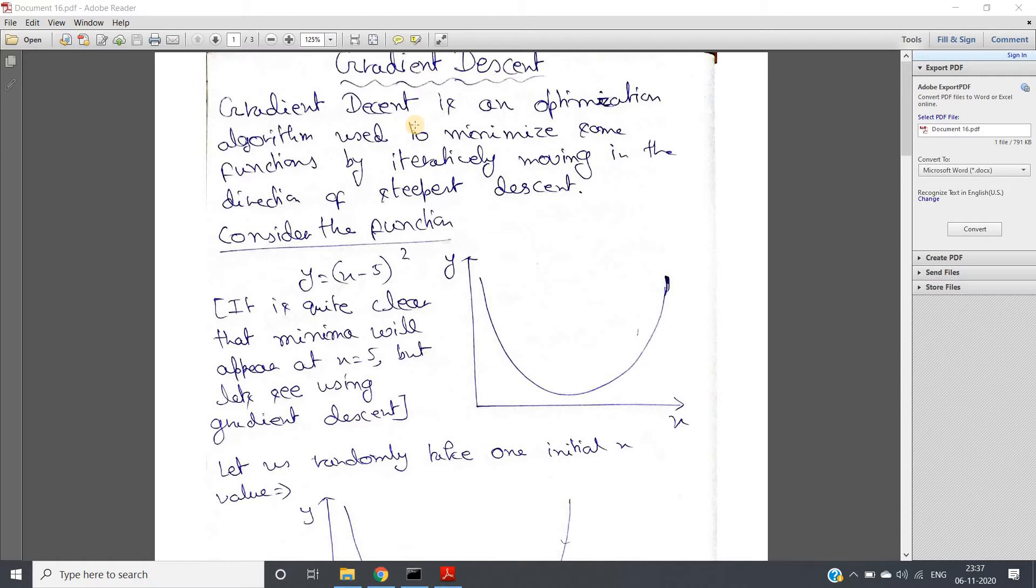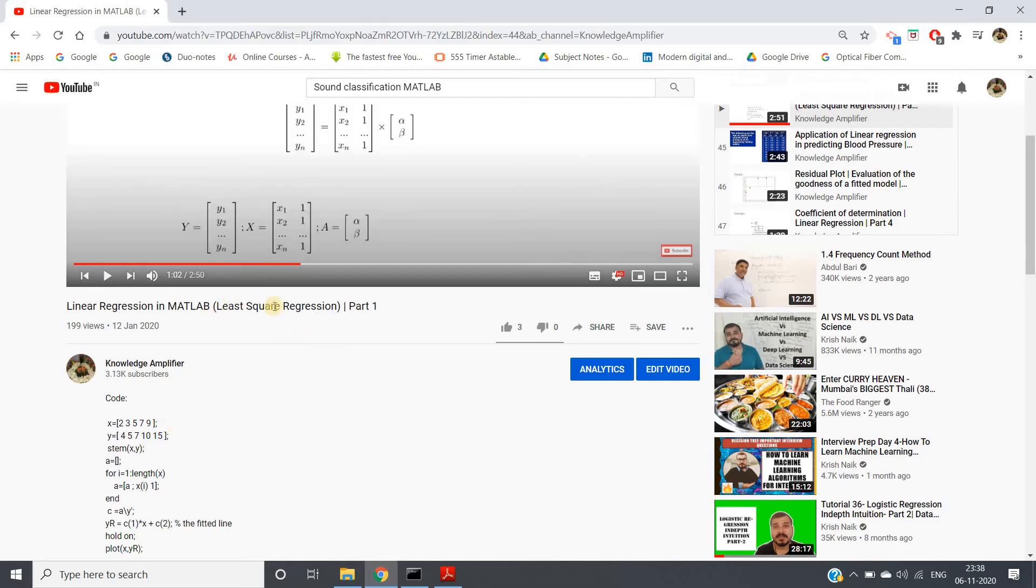or the correlation approach to derive coefficients, if you follow that approach you don't require feature scaling. But if you are using gradient descent, that time you need to perform feature scaling.